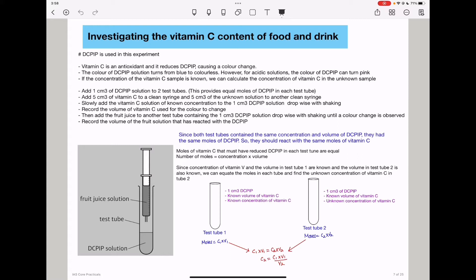However, if solutions are acidic, there is a chance that it's going to turn pink. So you need to know those colors. In this experiment, we'll refer to a vitamin C sample whose concentration is known, and then we'll use that to calculate the concentration of vitamin C in an unknown sample.